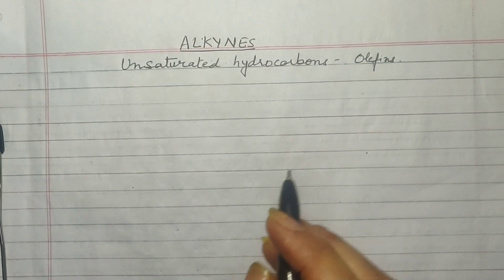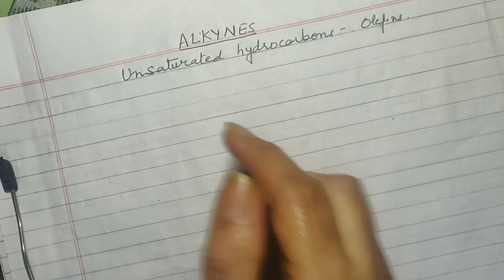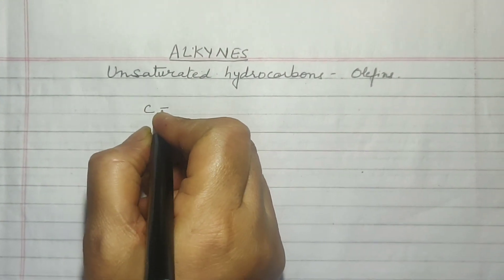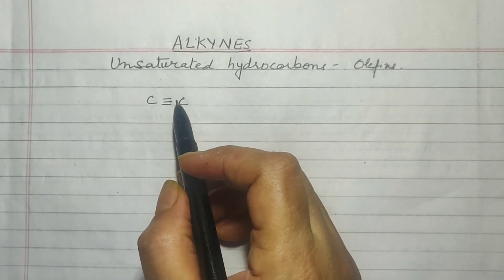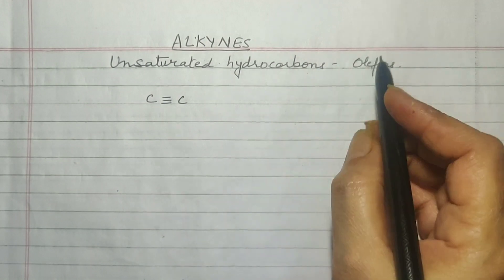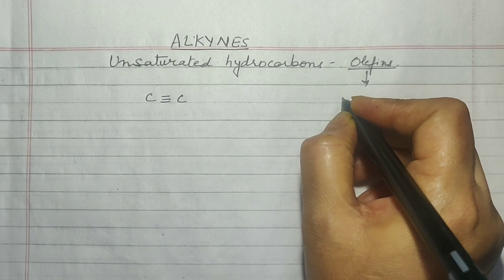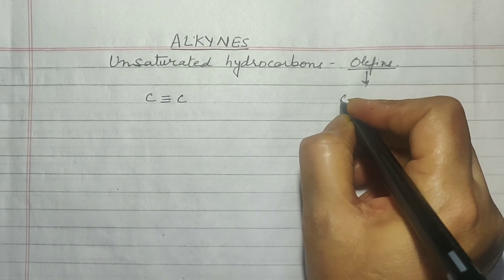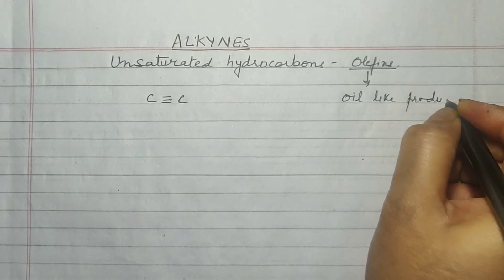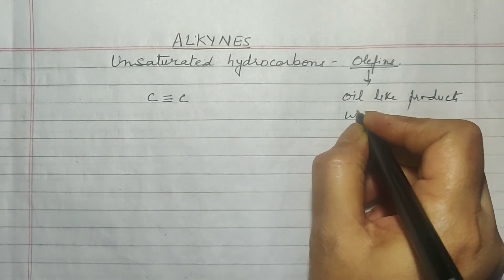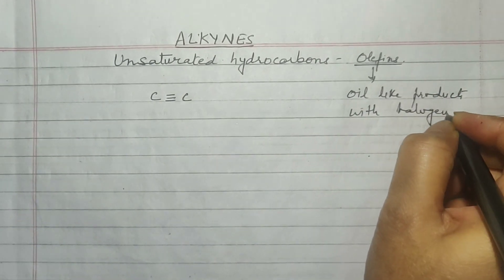Good day students. Today we are going to begin with Alkynes. Alkynes are the hydrocarbons that have a triple bond between two carbon atoms. These hydrocarbons are also unsaturated and they are also called olefins — compounds which form oil-like products especially with halogens. That is why they are called olefins.